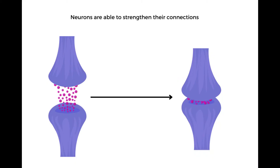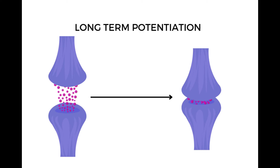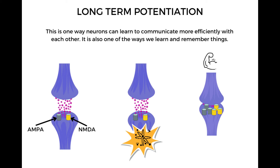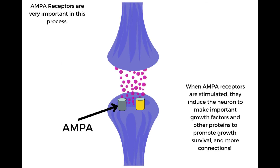Neurons are able to strengthen their connections with each other. They do this in very complicated ways. One of the ways they do this is something called long-term potentiation. Glutamate binds to both NMDA and AMPA receptors, and a cascade of reactions occur within the neurons. This causes the neurons to become stronger, more viable, and strengthens their connections with each other. This is one way neurons learn to communicate more efficiently with each other, and also one of the ways we learn and remember things. It turns out that AMPA receptors are very important in this process, probably more important than NMDA receptors.